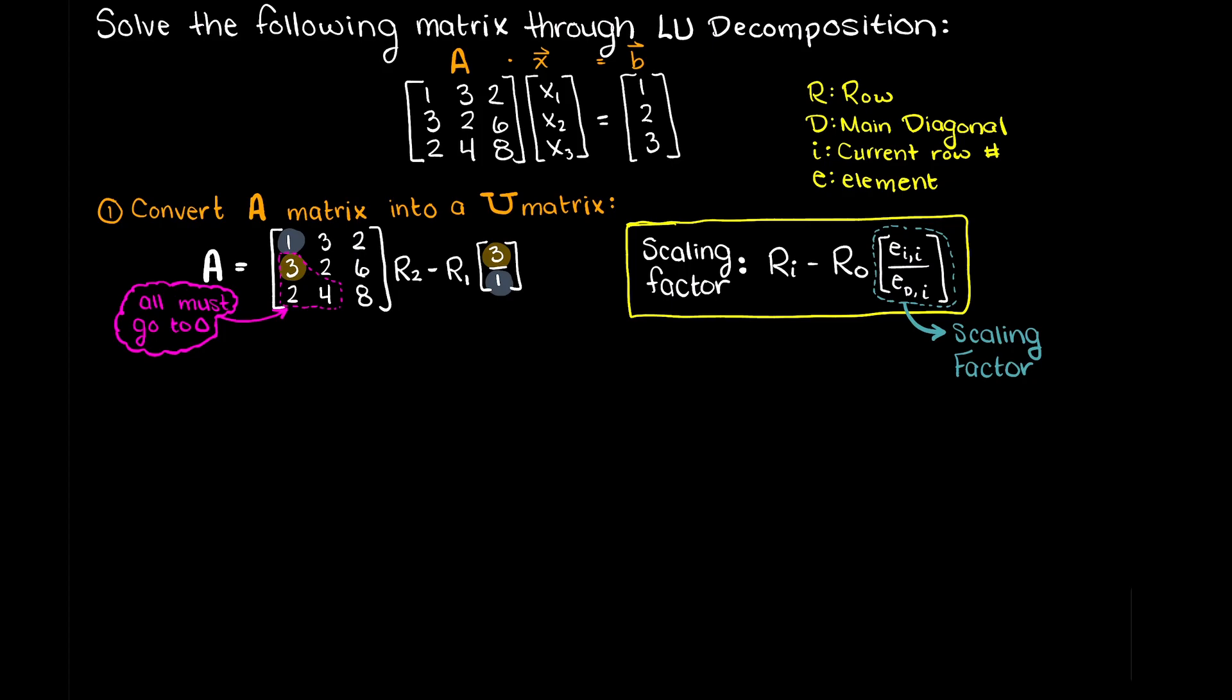Therefore we have row 2 minus row 1 times our scaling factor of 3 over 1. So, let's do the same thing for row 3 and we have row 3 minus row 1 times our scaling factor of 2 over 1. Now, we just need to complete the calculations.